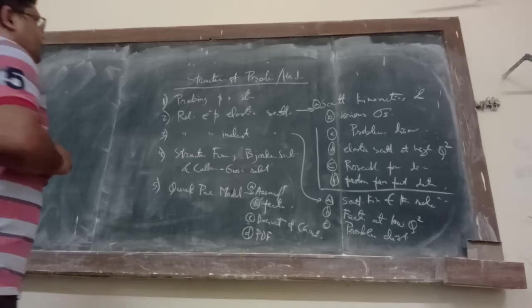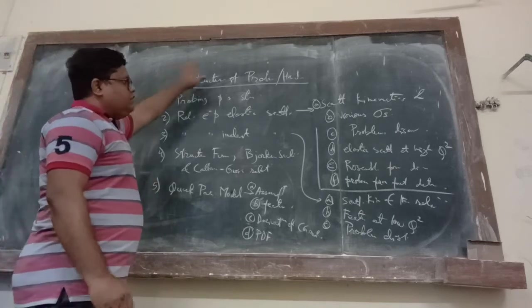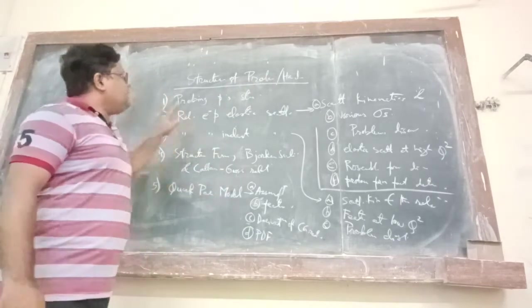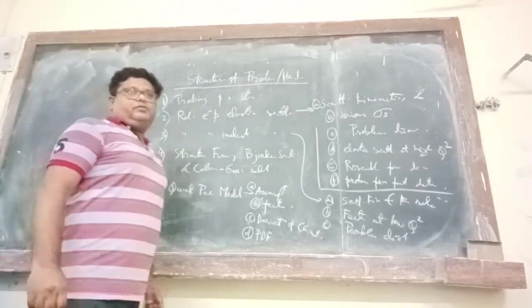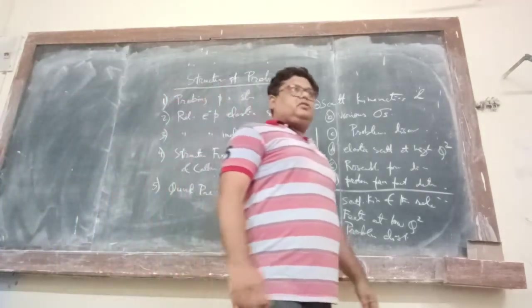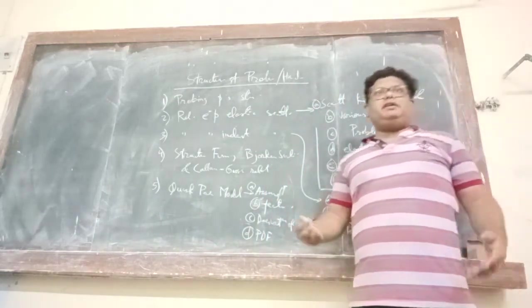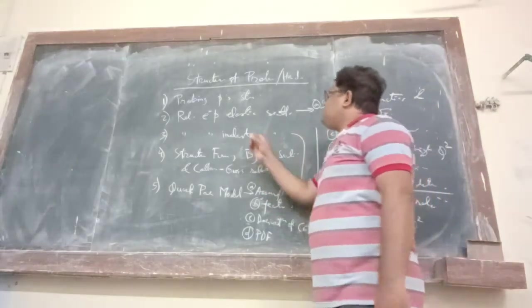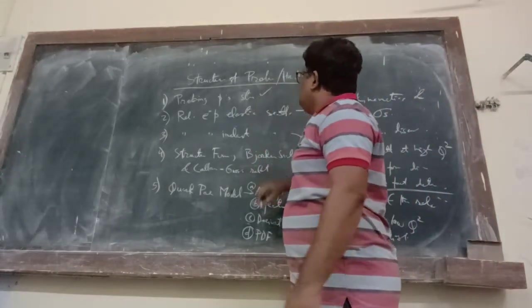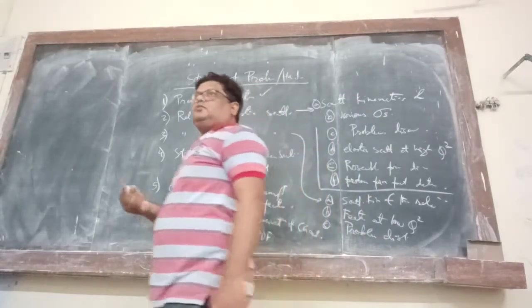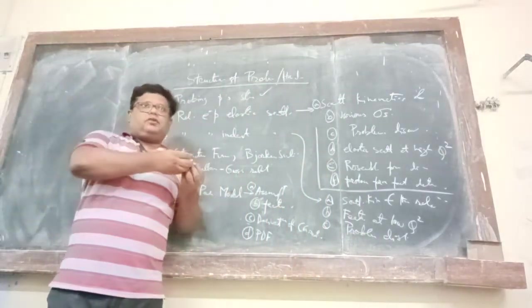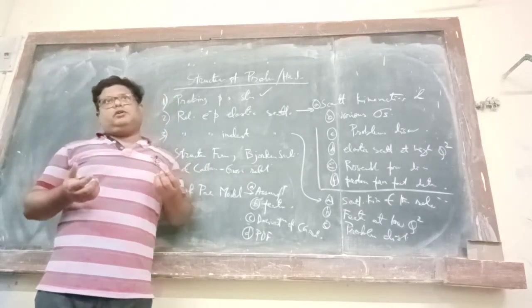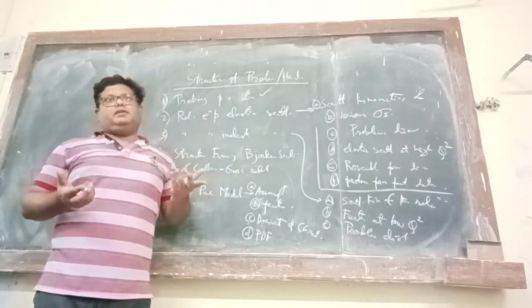So here I have already written down the various subtopics which we have discussed in this structure of hadron section of our syllabus. What are the various things we discussed? Basically today I am just summarizing. We started by discussing how to probe the structure of photon, what happens when we go from lower energy to higher energy. Also we talked about what the various probes should be.